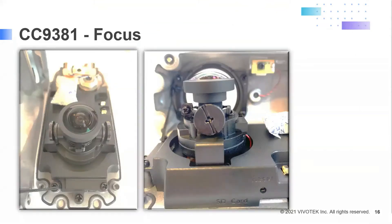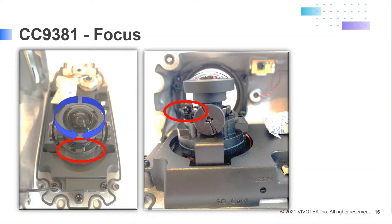The CC9381 allows for manual focus. If you ever notice the picture is out of focus, you can manually adjust the lens to get it back into focus. When you remove the camera housing, there is a tiny screw that needs to be loosened, and you can then turn the lens in either direction until you get a focused image.